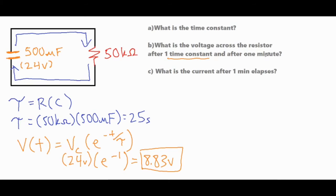Now for the next part it asks for the voltage after one minute so that's obviously more than 25 seconds so I should expect a voltage that is significantly less than the 8.83 volts that I just got. So I would plug in the original voltage of the capacitor again times e to the negative 60 over 25 for the exponent and then I end up with 2.18 volts across the capacitor.